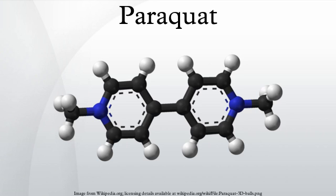Paraquat interferes with electron transfer, a process that is common to all life. It is an electron acceptor in redox and radical reactions. As an herbicide, paraquat acts by inhibiting photosynthesis. In light-exposed plants, it accepts electrons from photosystem I and transfers them to molecular oxygen. In this manner, destructive reactive oxygen species are produced. In forming these reactive oxygen species, the oxidized form of paraquat is regenerated, and is again available to shunt electrons from photosystem I to start the cycle again.